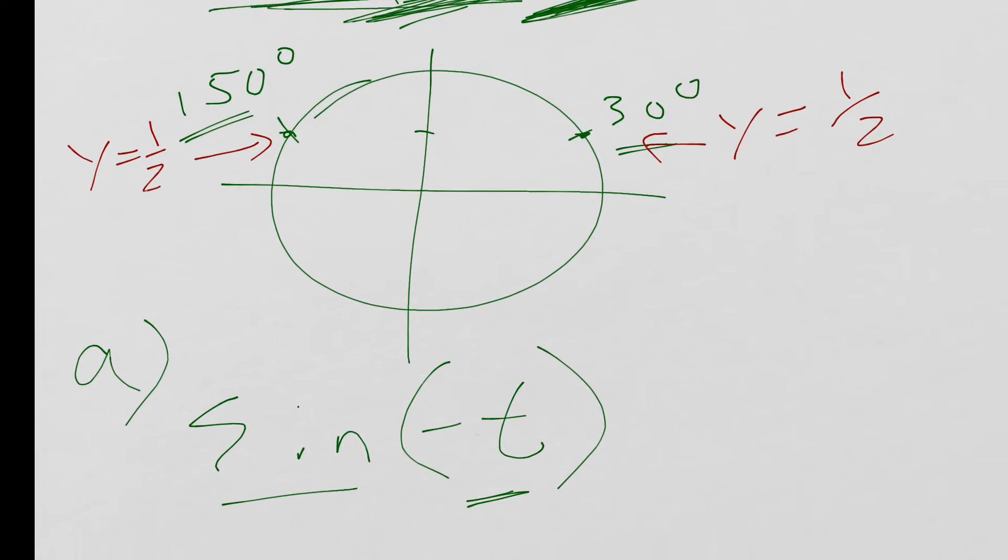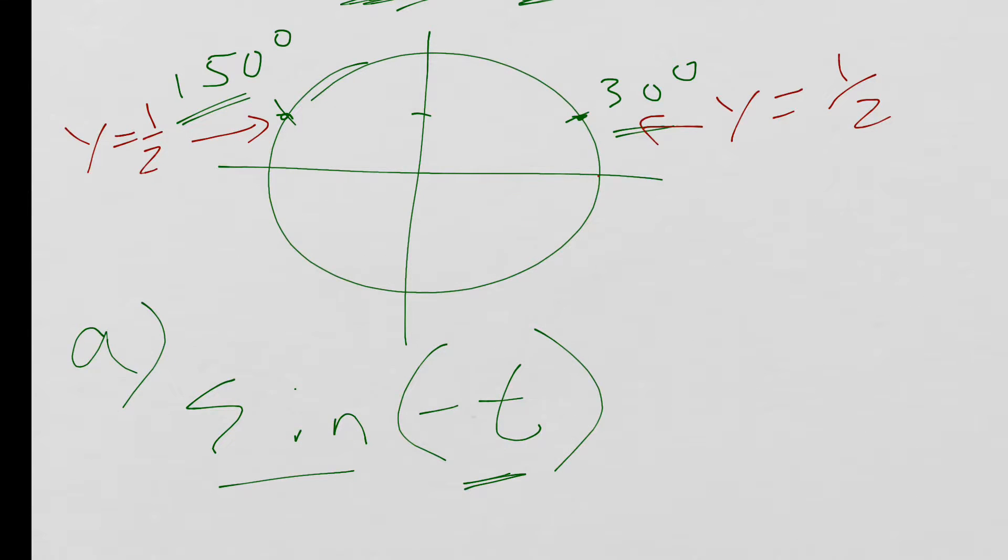What would happen if instead of going to positive 30 degrees, I went negative 30 degrees. Well, if I went to negative 30 degrees, the only thing that's going to change to my Y value is it's going to turn to negative.